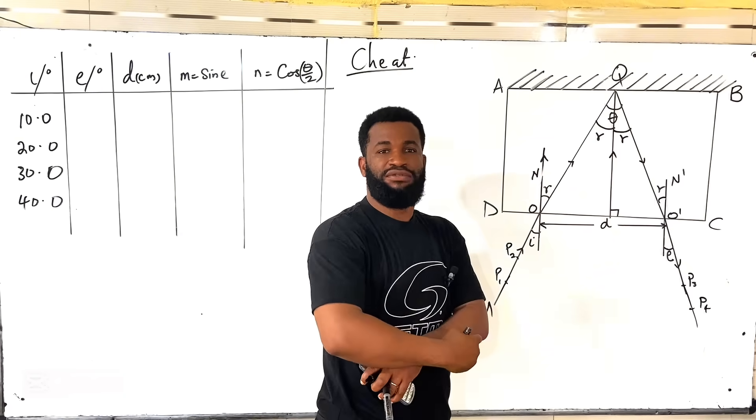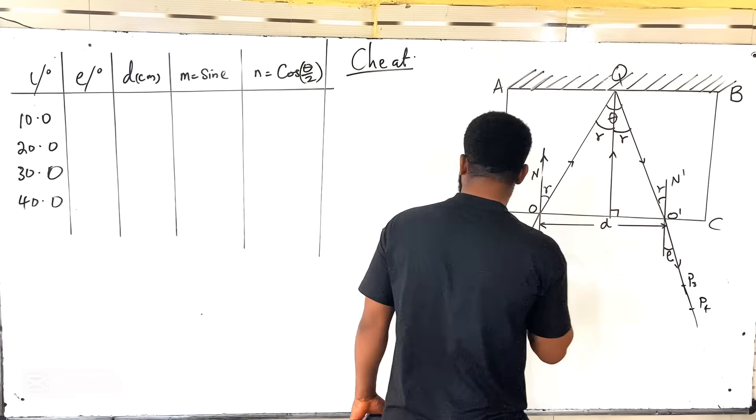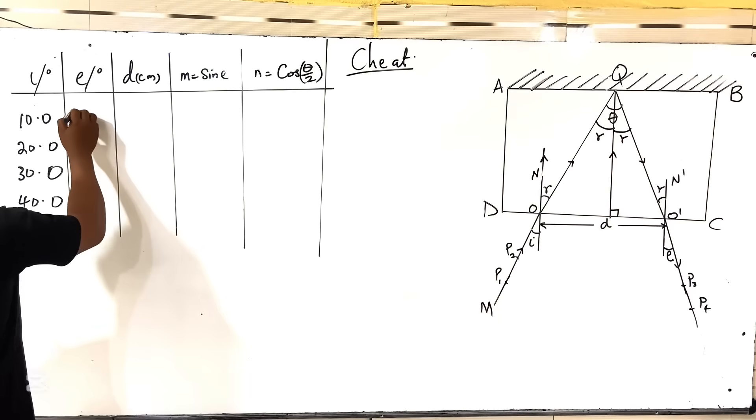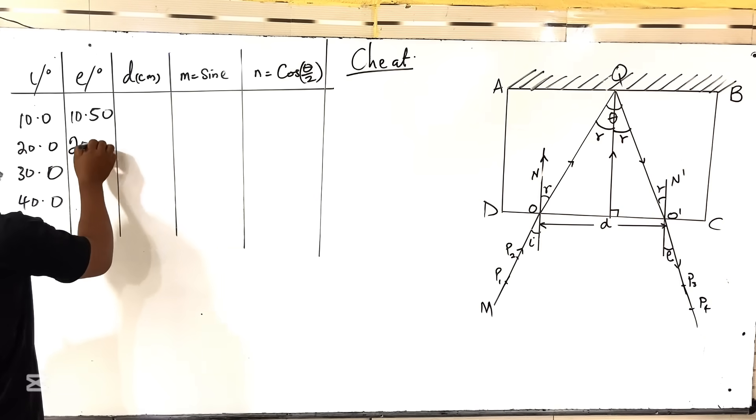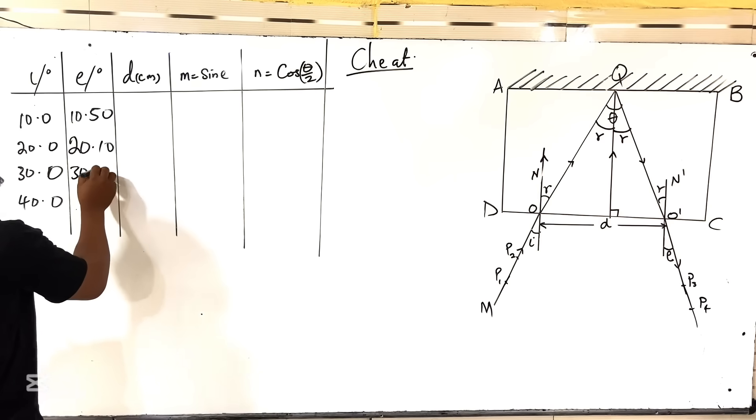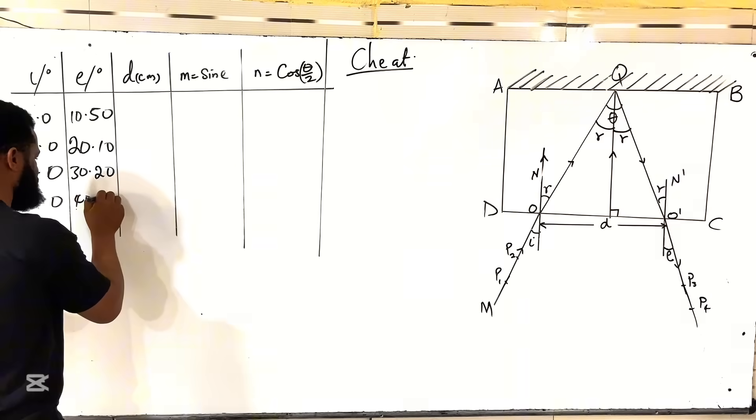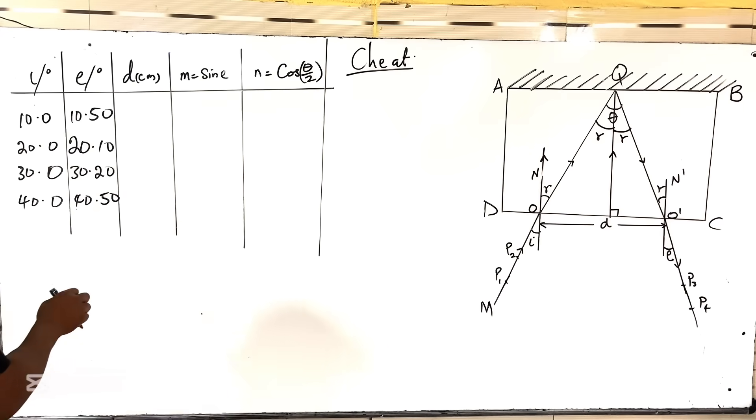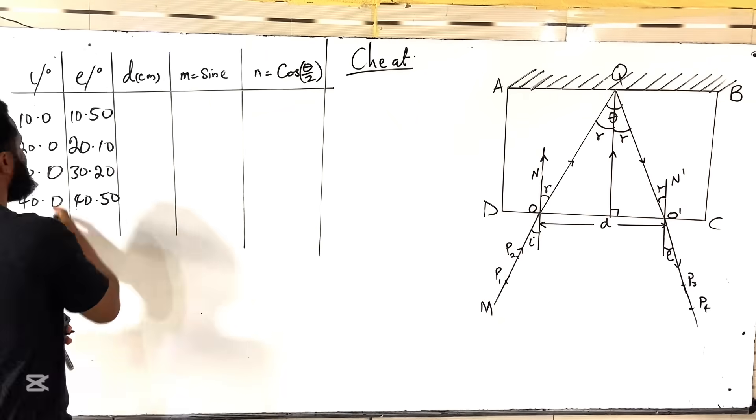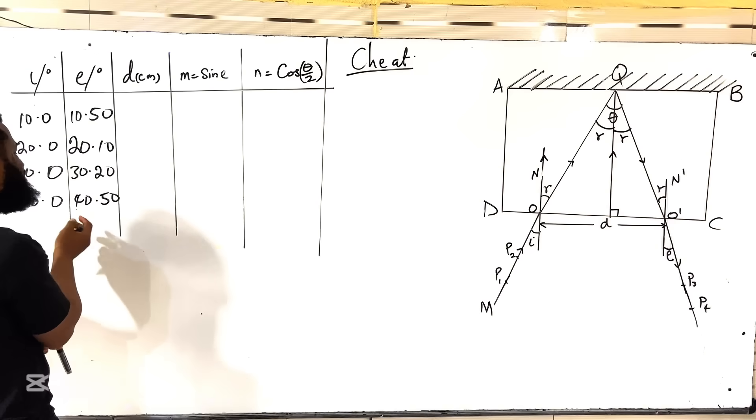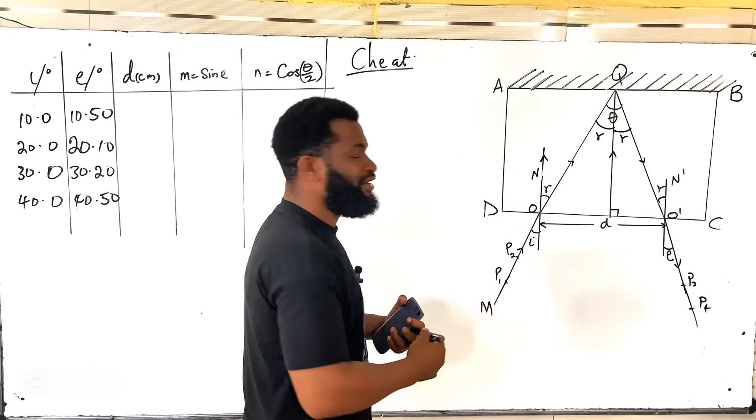This E must - not must, but if you perform the experiment correctly. So in order to pass, what you do is: if you are having I to be 10, E you can say is 10.50. Then 20 can be 20.10, 30 can be 30.20, maybe 40 can be 40.50. In order to have a little deviation from what you already have, this won't let the examiner know you are manipulating it.